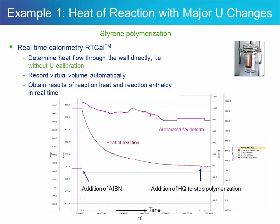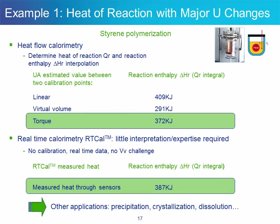The same experiment run using RT-Cal as a calorimetry method looks slightly different. No need for calibration before and after. The fill volume, or virtual volume, is determined automatically with no need for operator input. You can see here the nice heat of reaction profile. The results obtained using RT-Cal are very close to the ones obtained using heat flow, but without the level of evaluation and expertise that heat flow requires. In other words, RT-Cal is a transparent, effortless calorimetry technique, also very useful for precipitation, crystallization, or any example where viscosity or thickness of the reaction mixture changes over time.